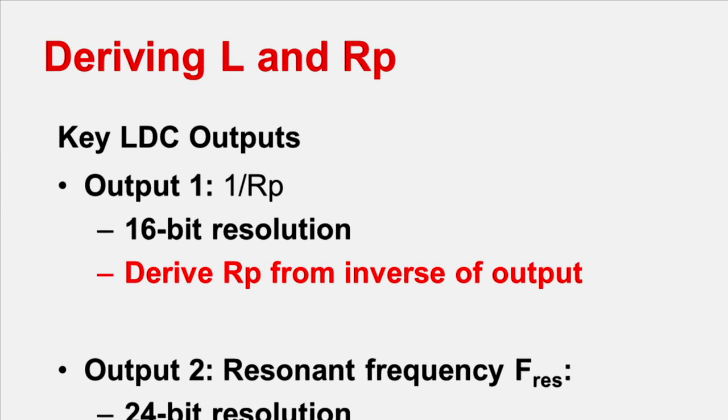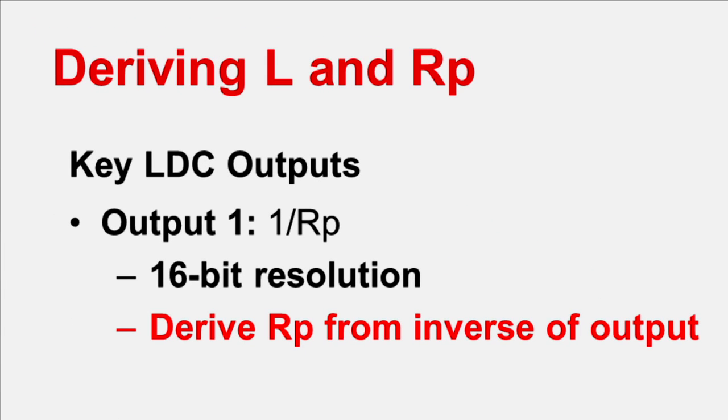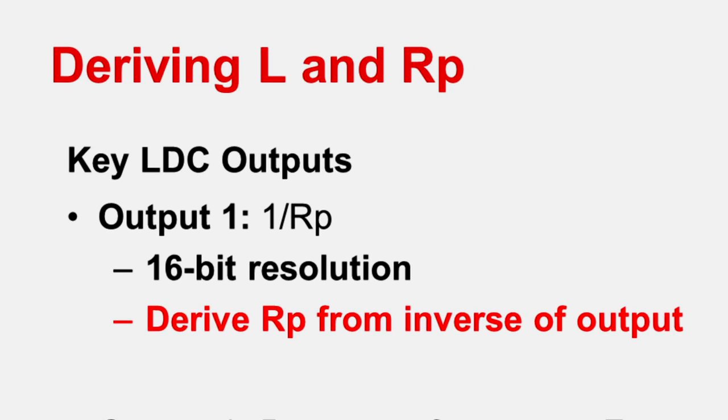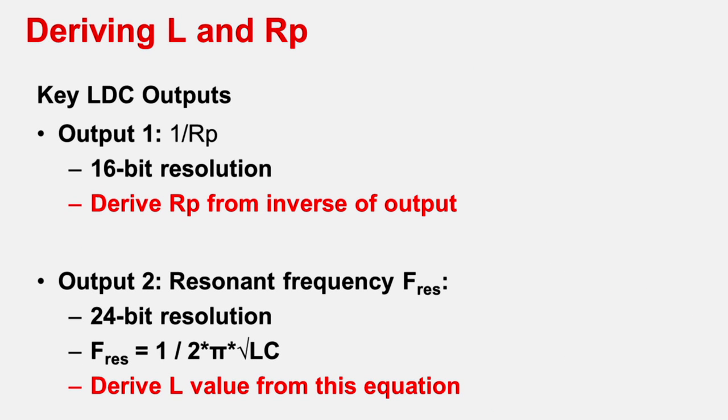The LDC has two key outputs. The first one is 1 over RP. This is in 16-bit resolution. And you can derive the actual value of RP of the sensor coil from this data. The second one is the resonant frequency. This is given in 24-bit resolution. And using the formula on the screen, you can derive the actual inductance of your sensor coil.